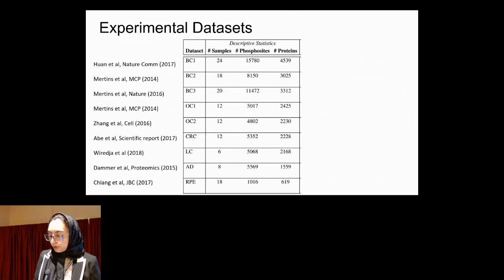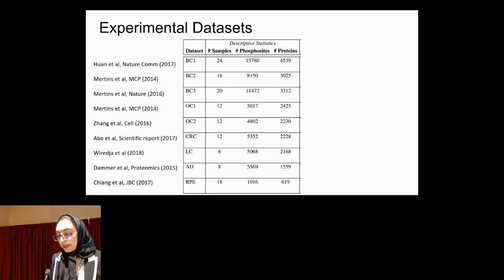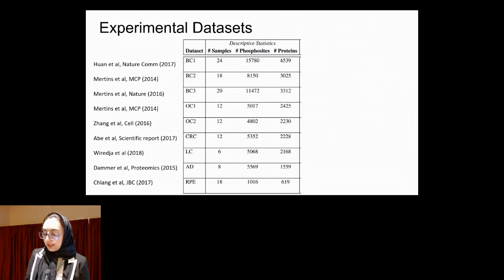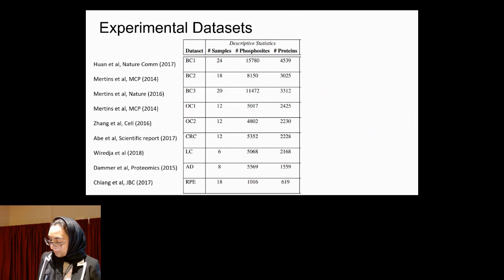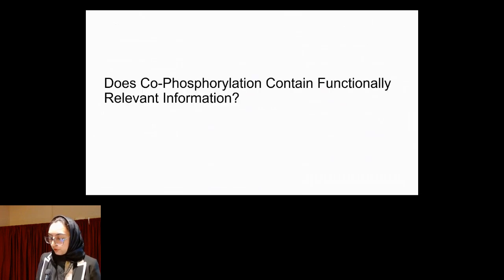We have three breast cancer datasets, two ovarian cancer datasets, one colorectal cancer, one lung cancer, one Alzheimer's disease dataset, and one retinal pigmented epithelium dataset. We analyzed all of these datasets.